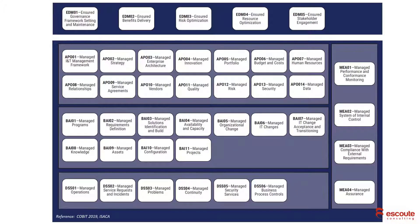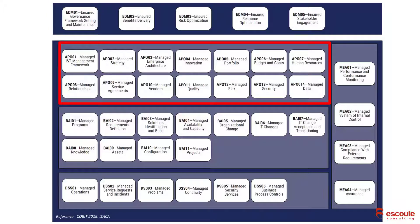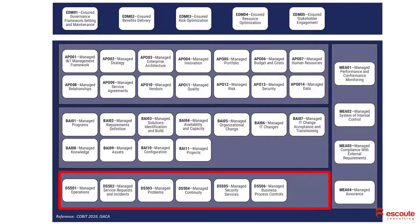You've seen this before in some of the other COBIT courses — these are the governance and management objectives. Remember we had five domains up top. You see EDM, or Evaluate, Direct and Monitor, with five objectives — those are called governance objectives. Below that we have our management domains: APO with 14 objectives, Build Acquire and Implement with 11 objectives, Deliver Service and Support with six objectives, and finally MEA with four objectives.